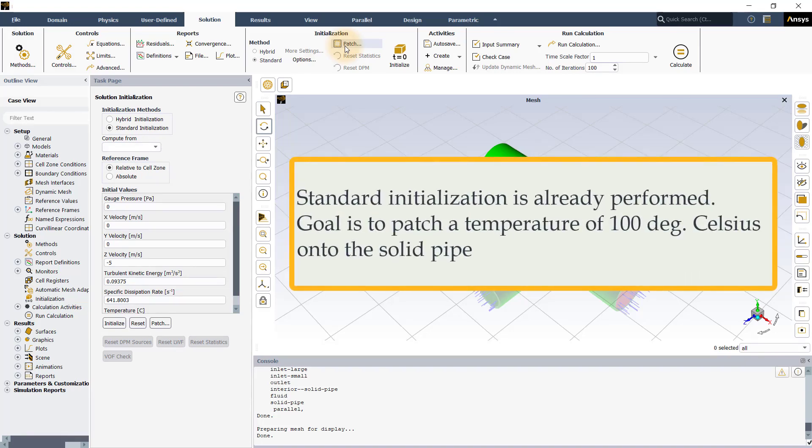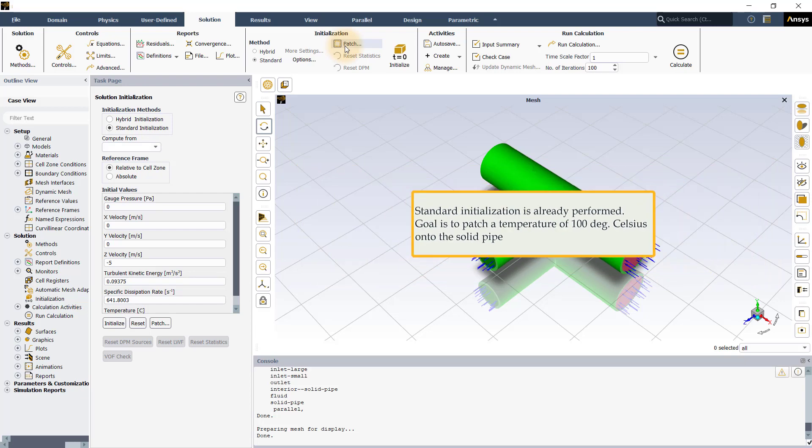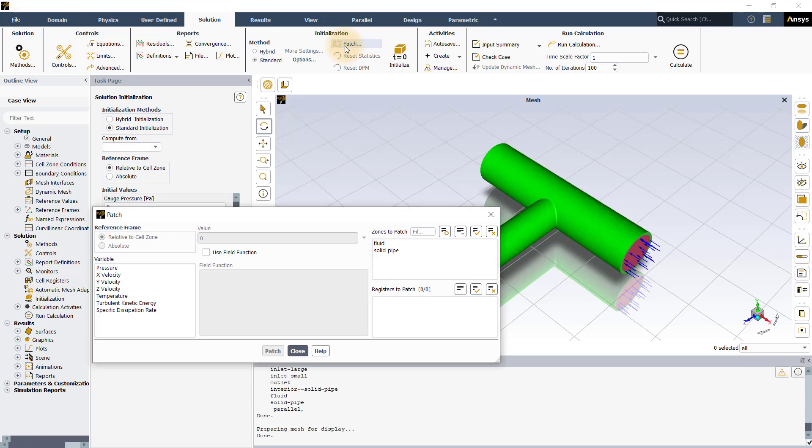The goal now is to patch a temperature value of 100 degrees Celsius onto the solid pipe. To perform the patch operation, click on the patch option and select the variable to be patched, which is temperature, and then select the zone that needs to be patched with the selected variable.